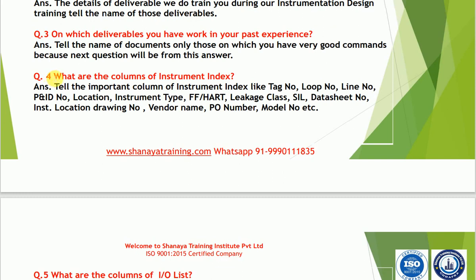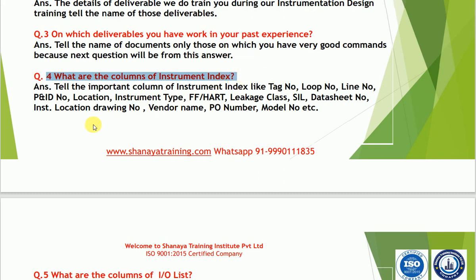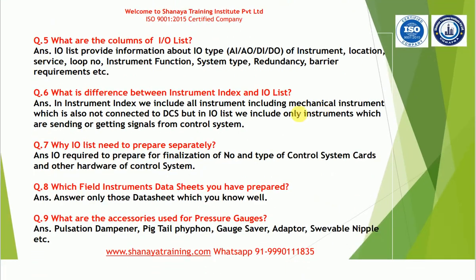Suppose you mention instrument index — the interviewer will ask: "What are the columns in the instrument index format?" Tell the important columns: tag number, loop number, line number, P&ID number, location, instrument type, FF and HART if applicable in your project, leakage class, seal, data sheet number, instrument location drawing number, vendor name, PO name, model number of the instrument, and so on.